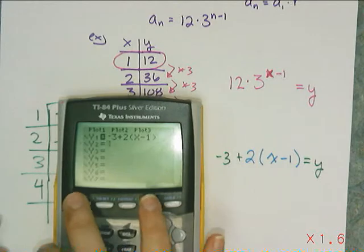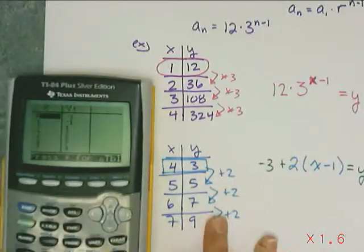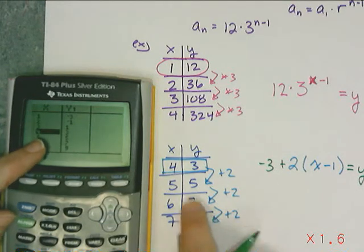So in order to do that, I go to the table and I check and see what I'm given. So at 4 I better have 3, and at 4 I have 3.